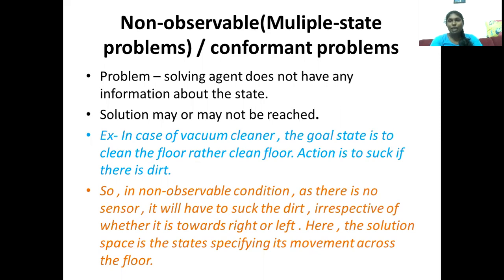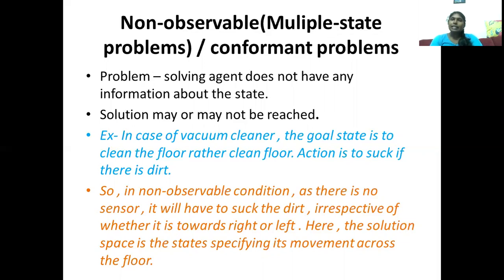Consider the same vacuum cleaner example, but this time the sensor is not available. The vacuum cleaner doesn't know exactly where it is right now. It needs extra information — wherever it is, it will try to suck the dirt. But the environment is not clear to the agent. This kind of problem is called a non-observable or multi-state problem — we don't know the current situation, and the agent doesn't know information regarding the environment.